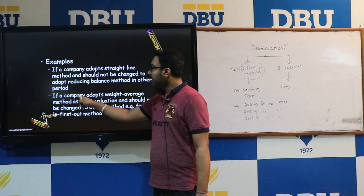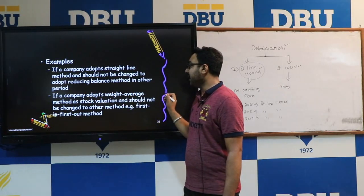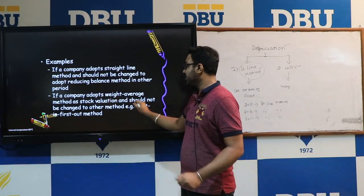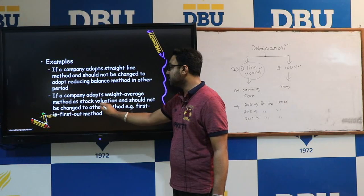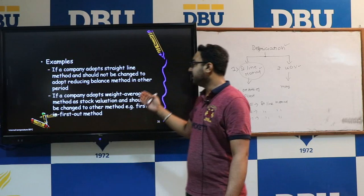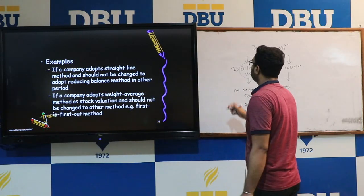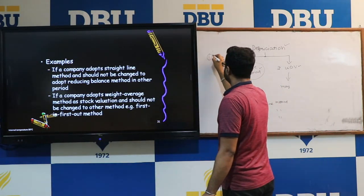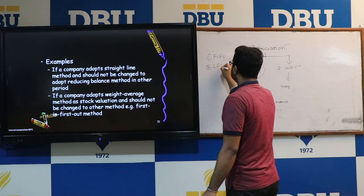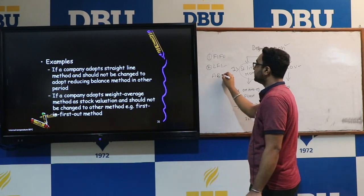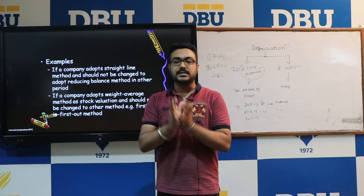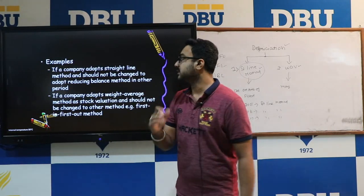Similarly, if a company adopts the Weighted Average Method for stock valuation, it should not be changed to another method such as First In First Out. There are various methods to calculate inventory — FIFO, LIFO, and ABC analysis. A company should follow one method in order to justify the concept of consistency.